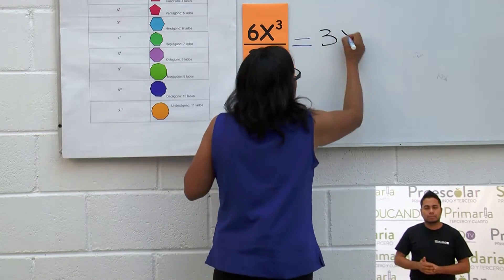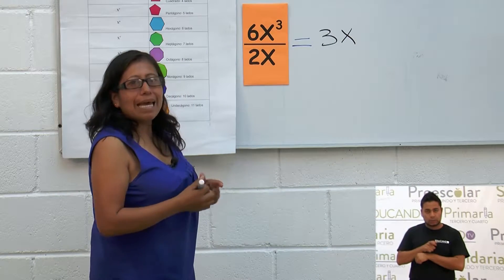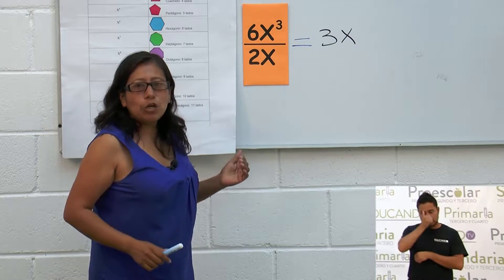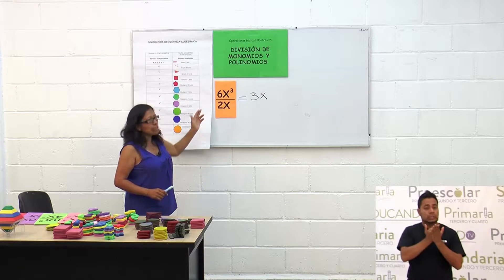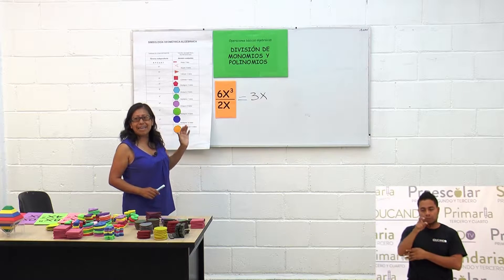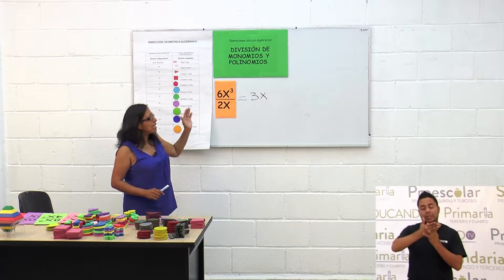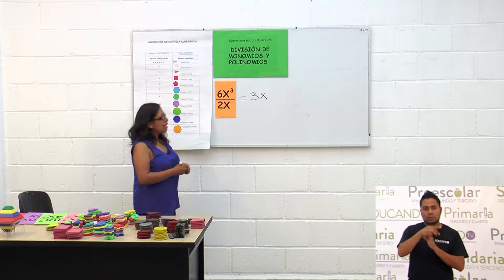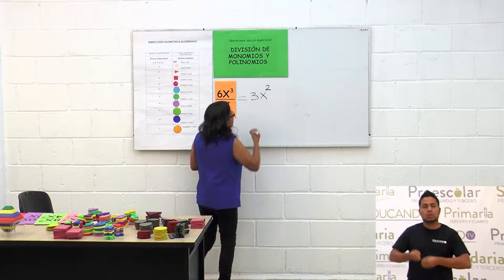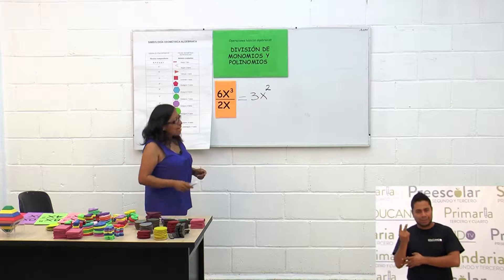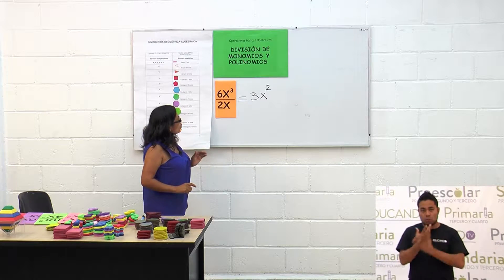Ponemos la x y recordemos que en la división se restan los exponentes. Aquí tenemos x cúbica entre x. Restamos 3 menos 1, que es 2, y nuestro resultado queda como 3x cuadrado.